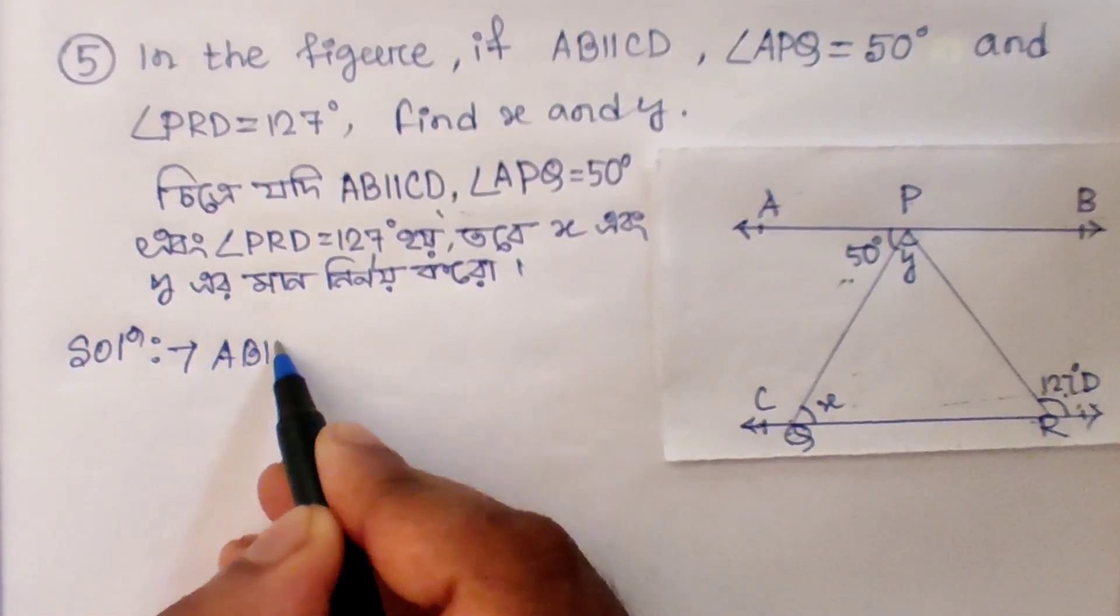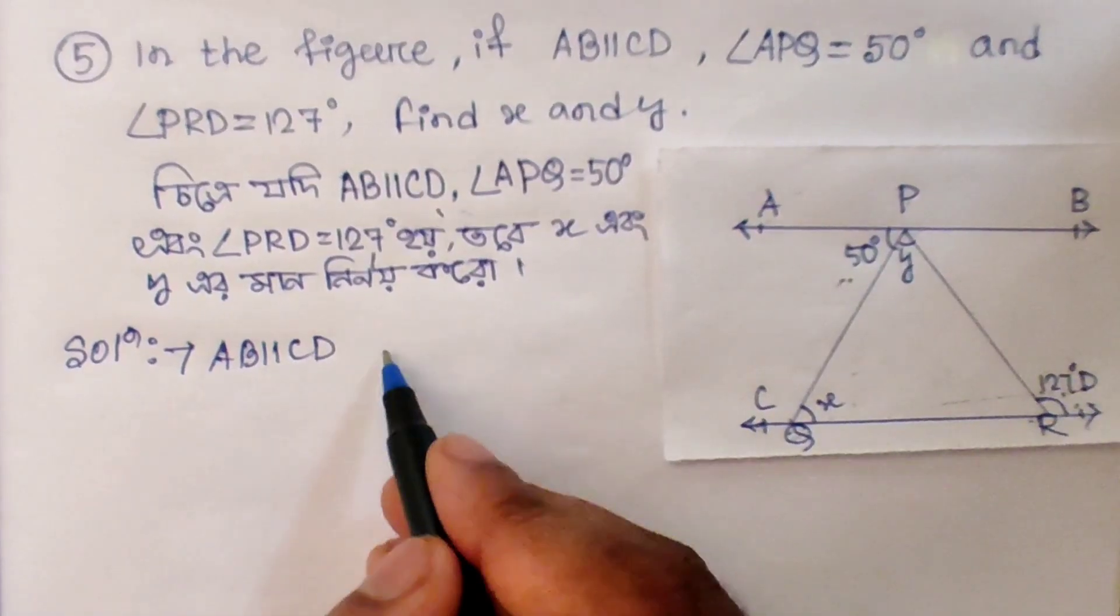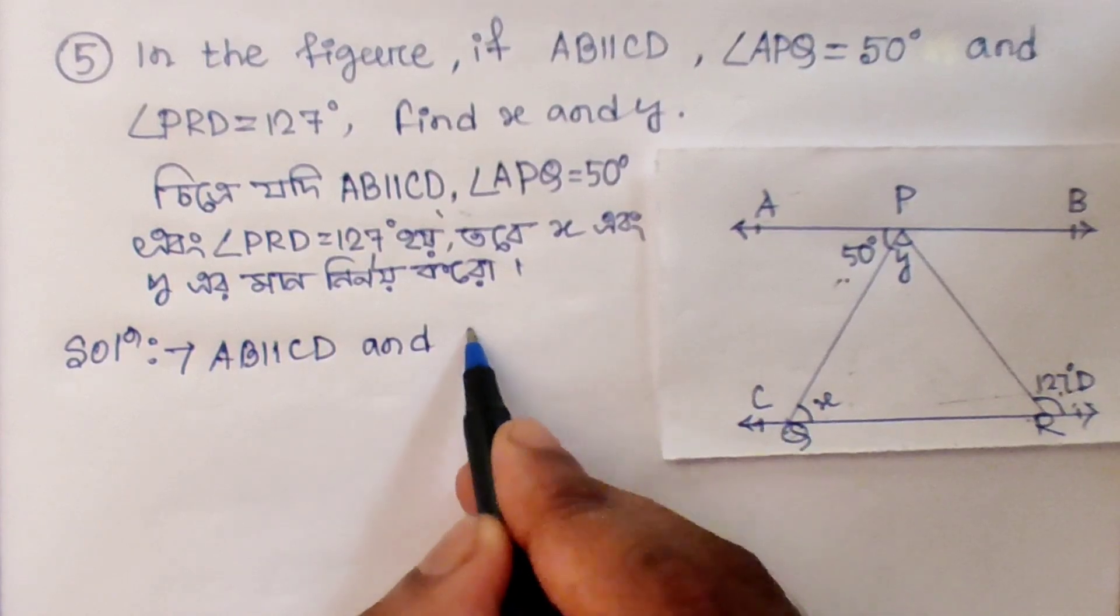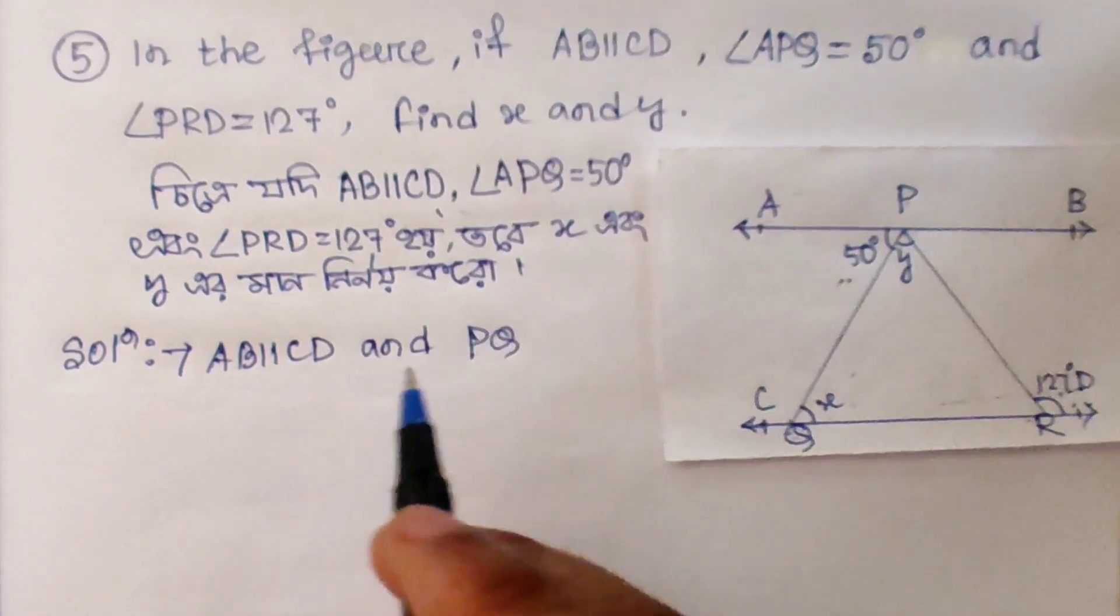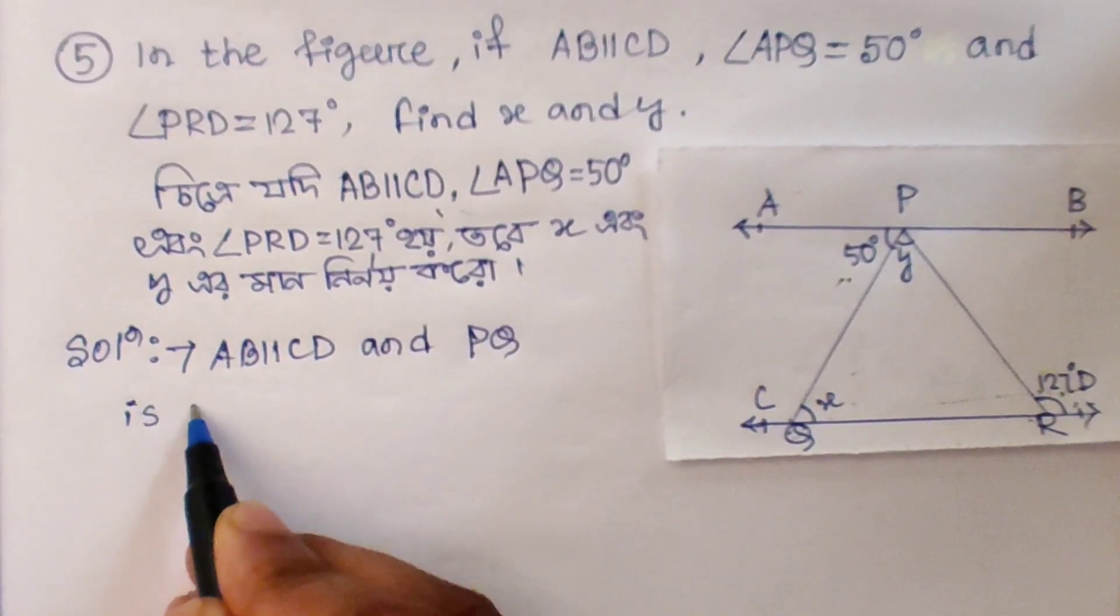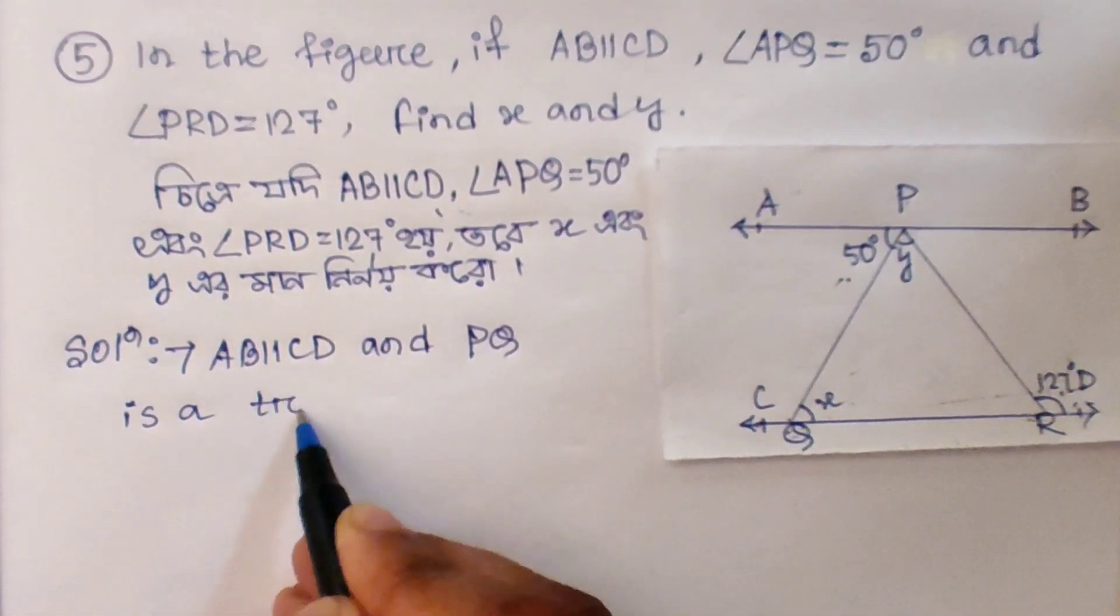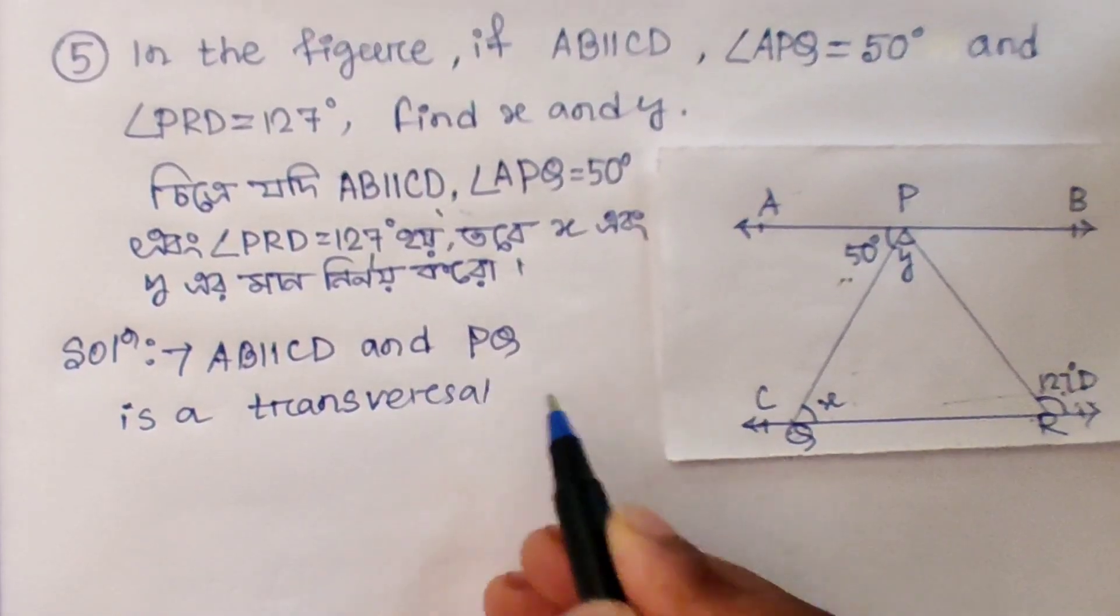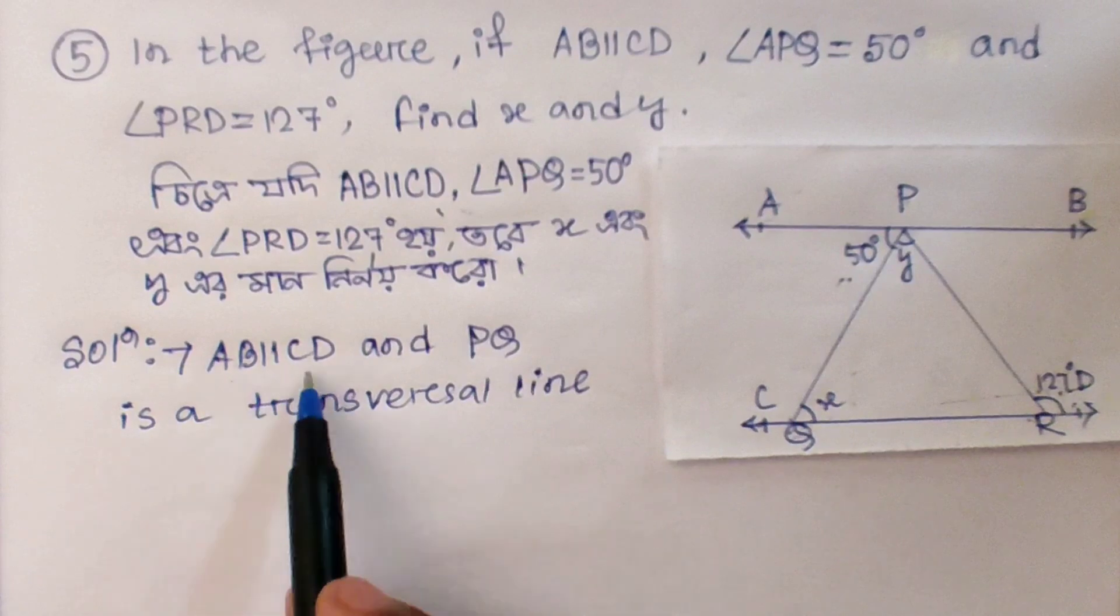AB parallel to CD and PQ is a transversal line.